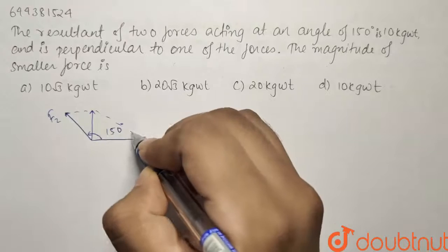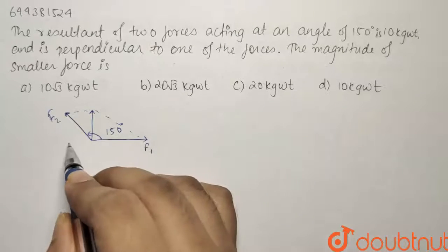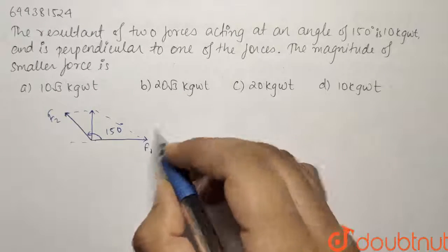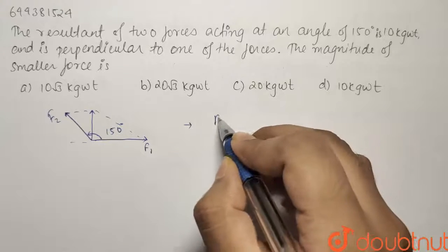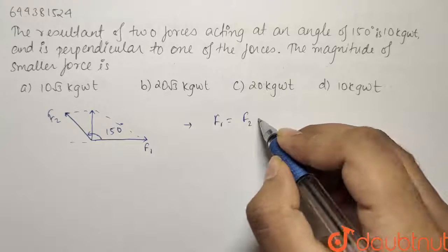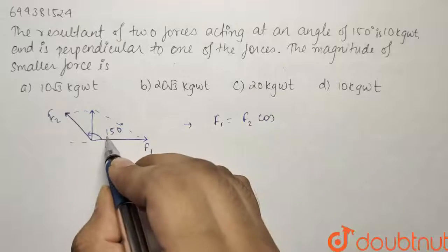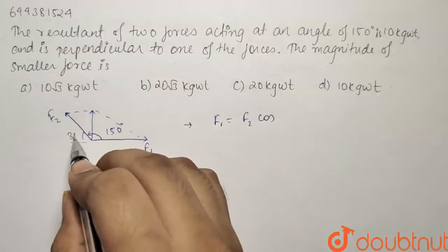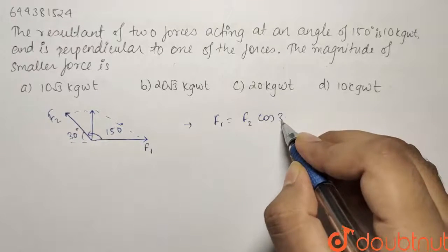We know that for the resultant to come perpendicular, then F1 should be balanced by F2. Cos of this is 150 degrees, so this is going to be 30 degrees. So it will be cos of 30 degrees.